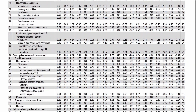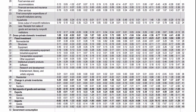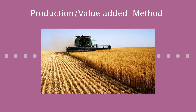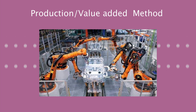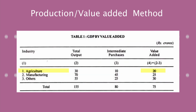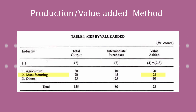Each product goes through a different industry before it's finally completed, like from agriculture to industrial to the retail sector. In this method, we segregate the value added by each industry to make the final product.